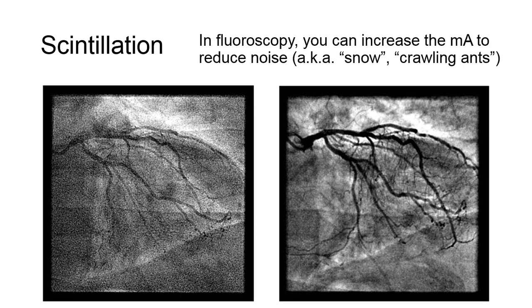So to remove noise from a fluoroscopic image, an increase in tube current, or mA, is required to produce more photons in a given amount of time.